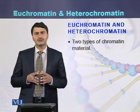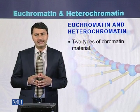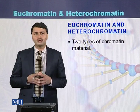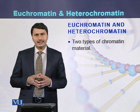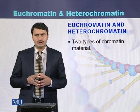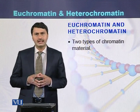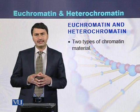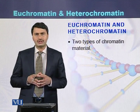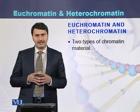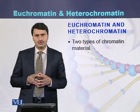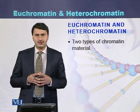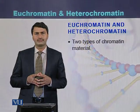In conclusion, chromatin is of two types: U-chromatin and heterochromatin. Heterochromatin also has two types: facultative heterochromatin and constitutive heterochromatin.